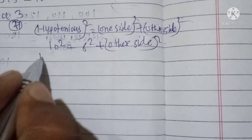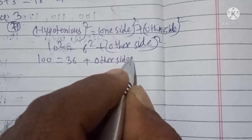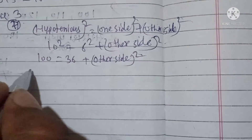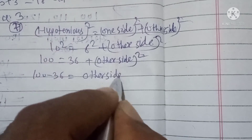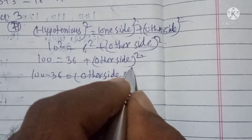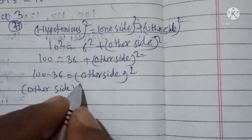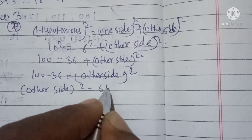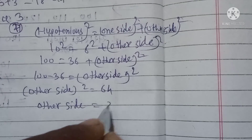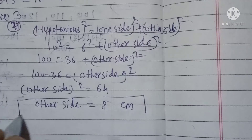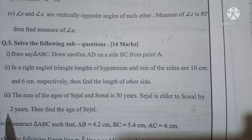Continuing: 100 equals 36 plus other side squared, so other side squared equals 100 minus 36 equals 64. Taking the square root, the remaining side equals 8 centimeters.